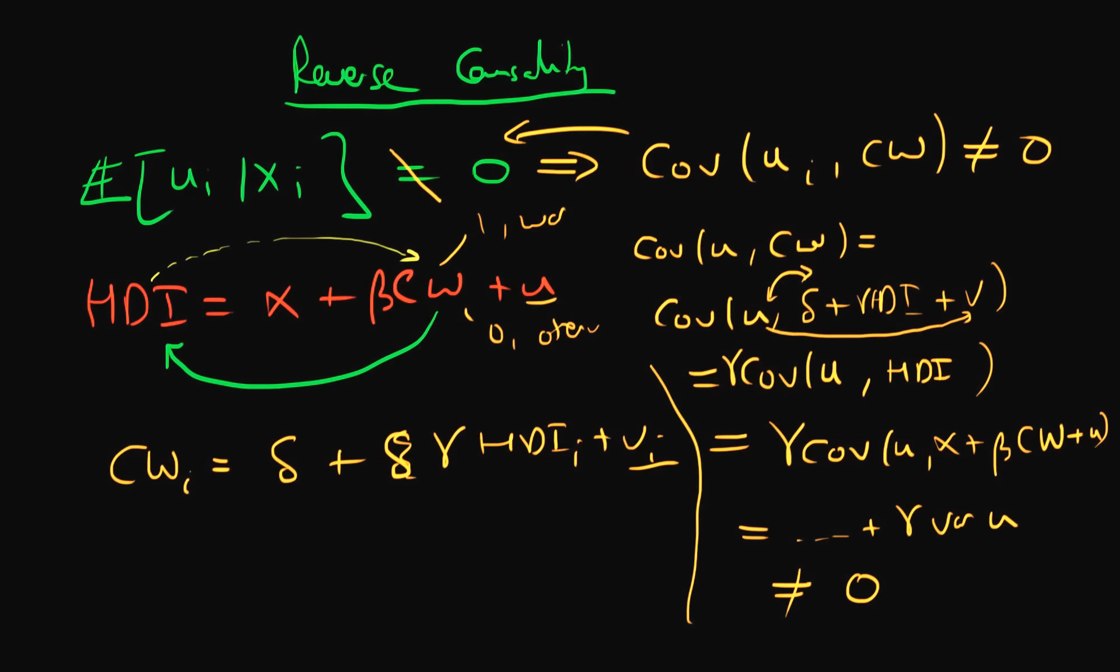What direction is it likely to be biased? Well, it is likely going to overstate the effect of the prevalence of civil war on a country's HDI index because gamma in this relationship is likely to be less than zero as well.